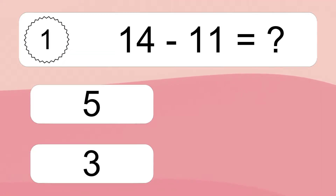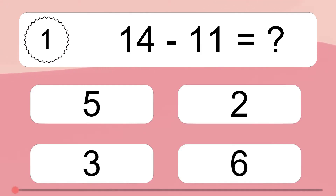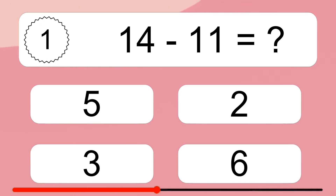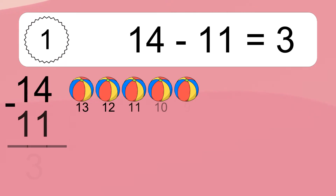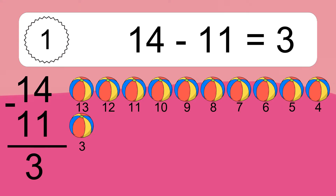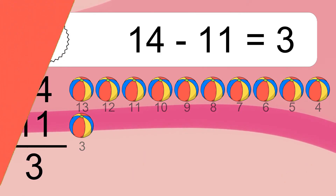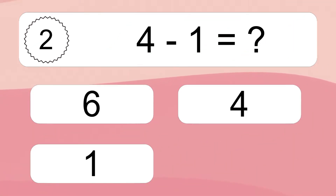14 minus 11 equals what? 14 minus 11 equals 3. Let's count it: 13, 12, 11, 10, 9, 8, 7, 6, 5, 4, 3.